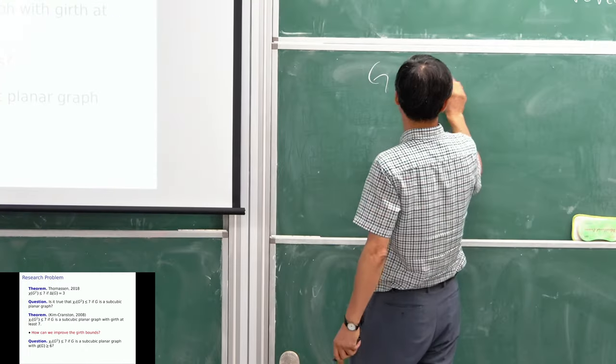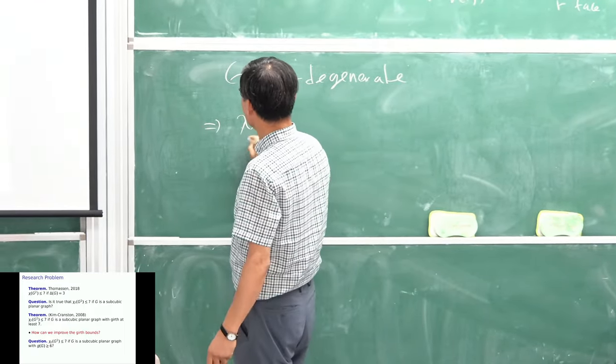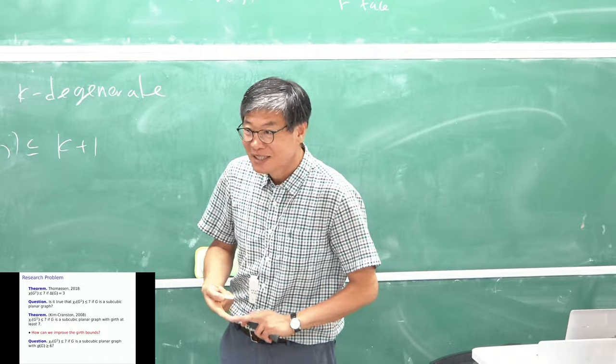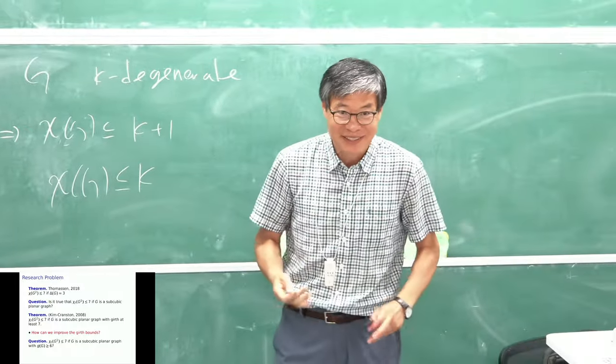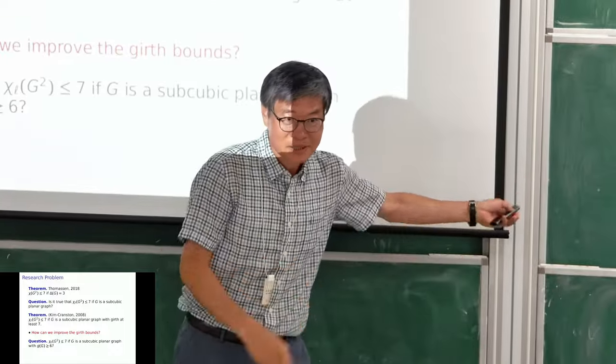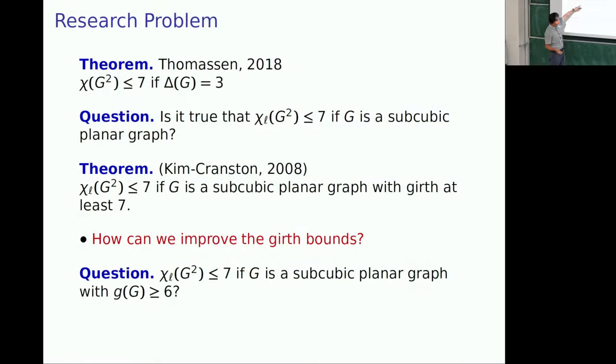So, this is the type. If G is K-degenerate, then, we can show very easily, upper bound K plus one. But, maybe, in general, nobody can say, upper bound K. So, reduce one color is very difficult in this case. So, here, maybe, similar happening. So, actually, it's not difficult to get this result. But, reduce, if you want to reduce girth from seven to six, it was not easy.